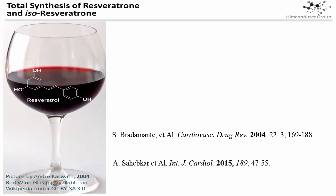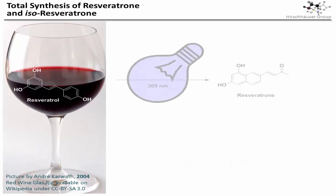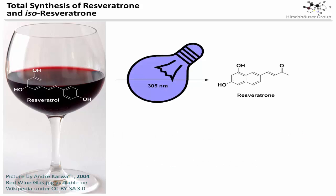Well, unfortunately we have to pour some water into your wine here — these health benefits seem somewhat debatable. But we are not here to talk about resveratrol, but resveratron. Resveratron can be generated from resveratrol by irradiating it with UV light. This results in a highly fluorescent molecule, and the interesting thing about resveratron is that there is some evidence that it allows for two-photon absorption.